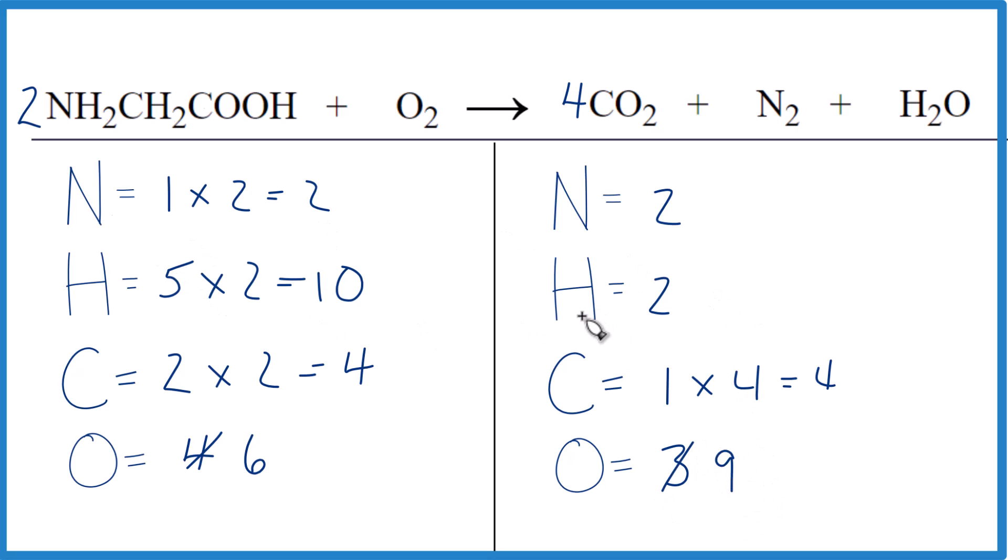So for the hydrogens, it looks like we could just multiply, what, five here, and that would give us 10. And we have to update the oxygens again because we have four times two is eight, eight plus five, that's 13.